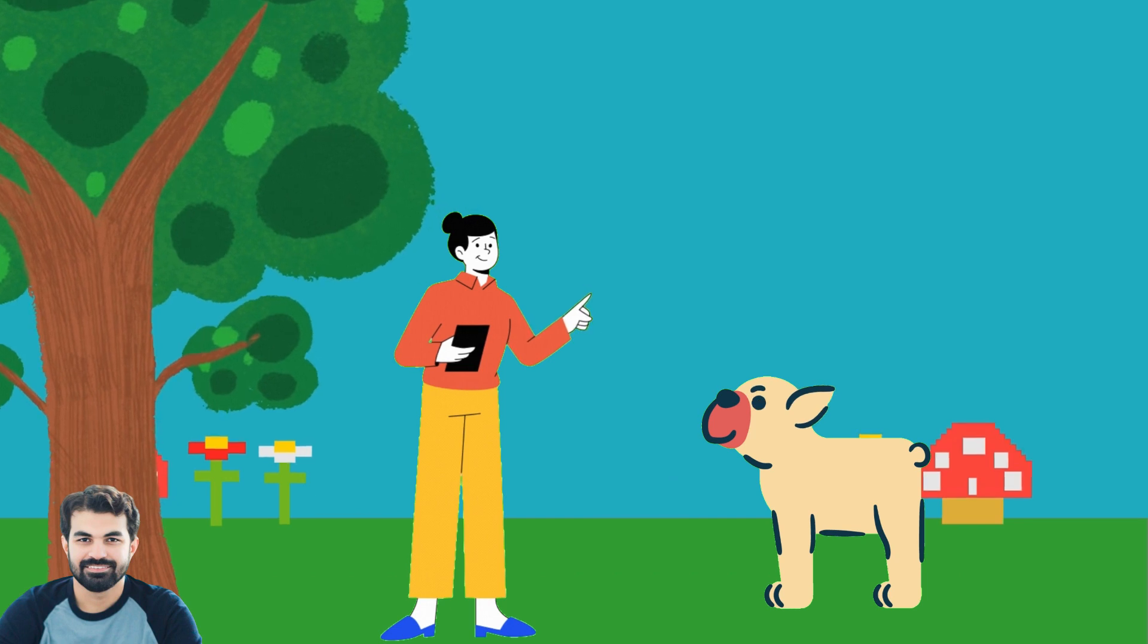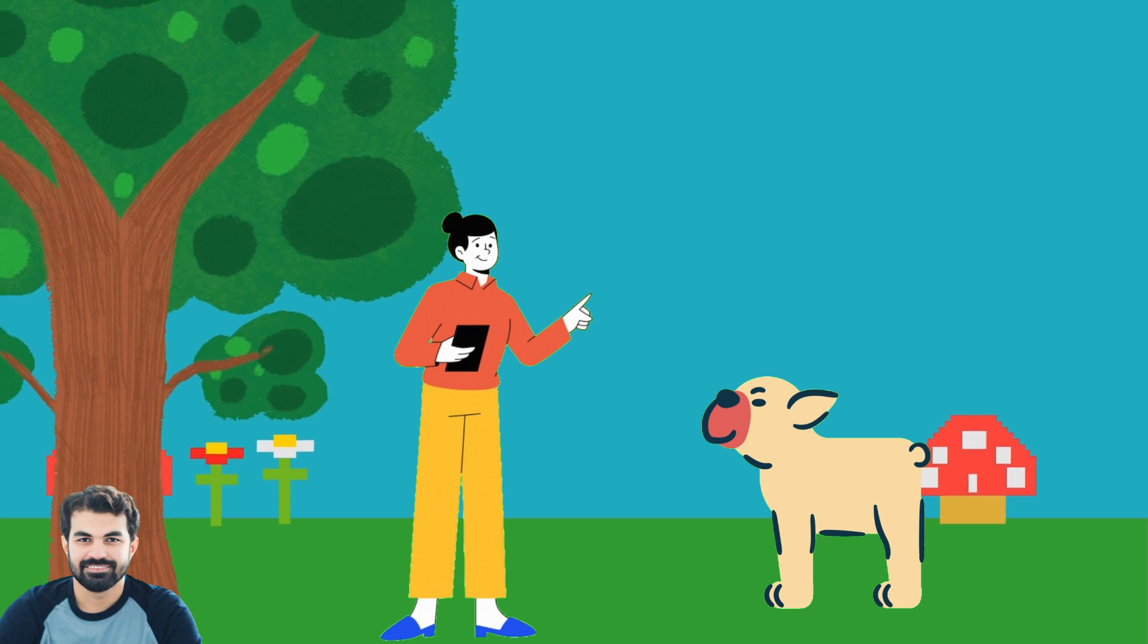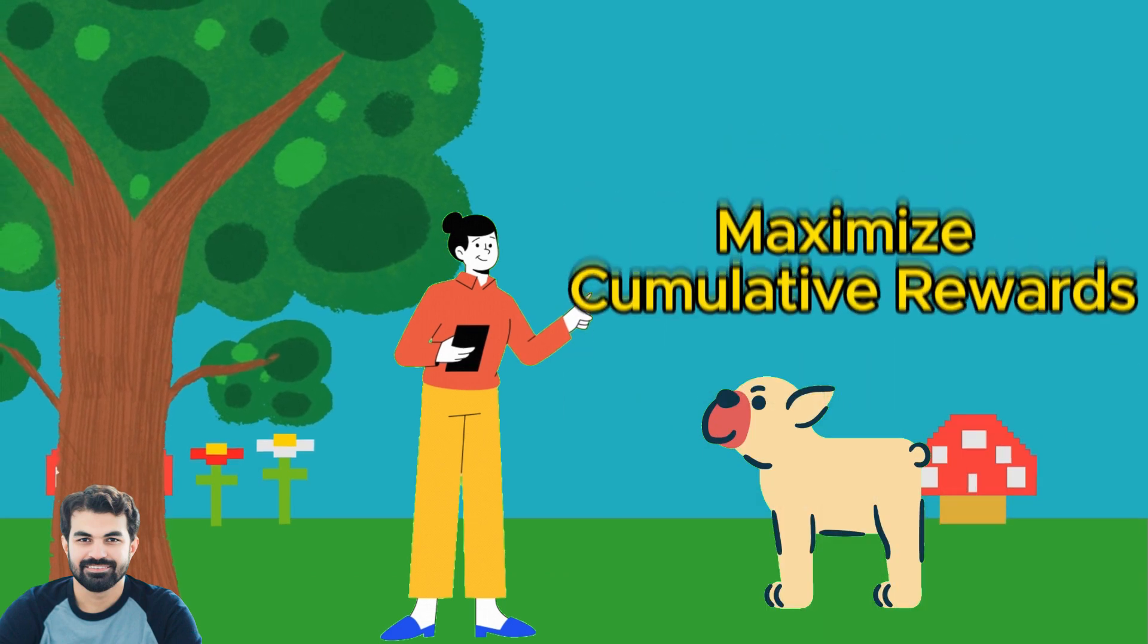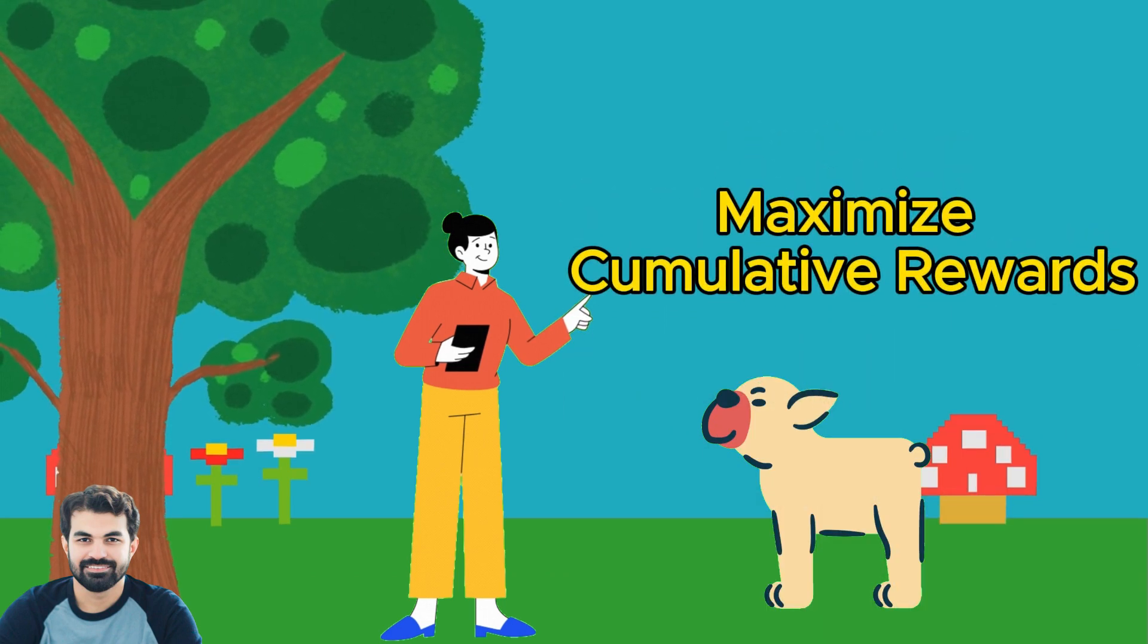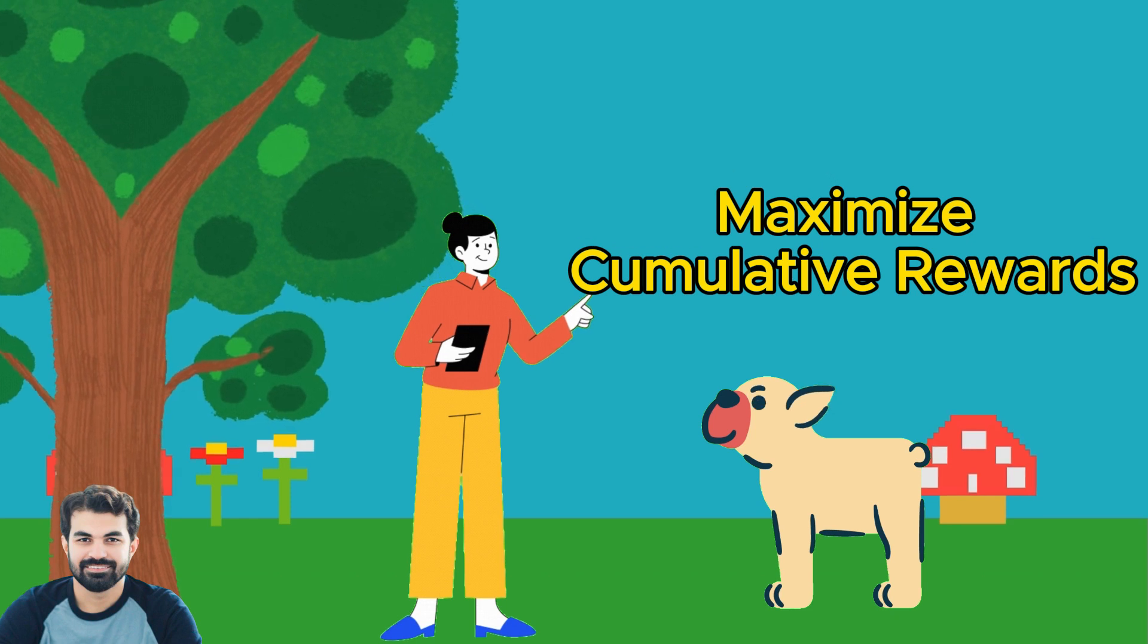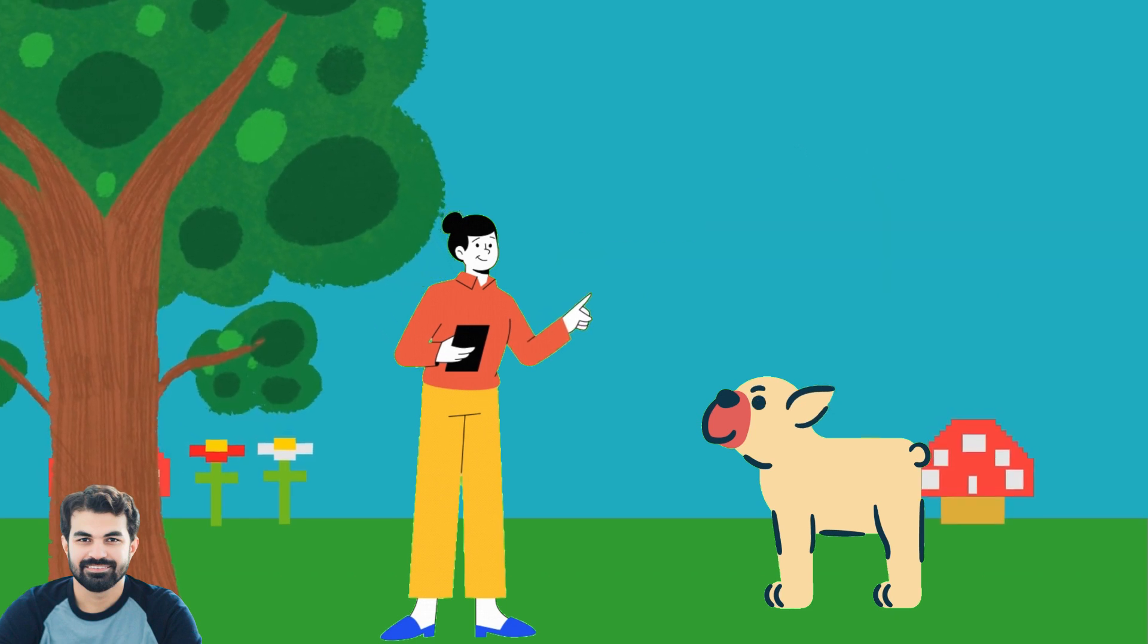Encouraged by this positive feedback, the dog realizes he's off to a promising start. From here on, his goal is simple: to maximize his rewards, aiming for the highest possible outcome now and in the future.